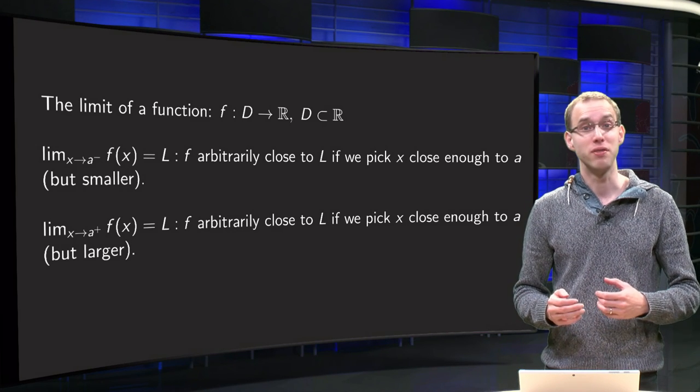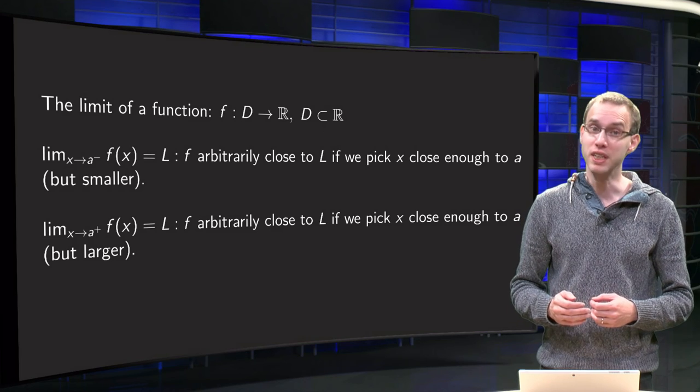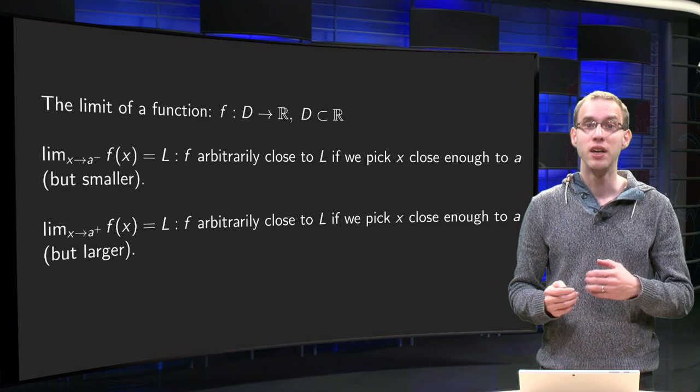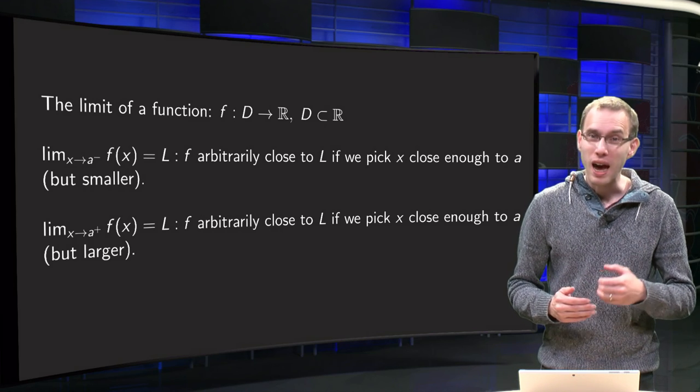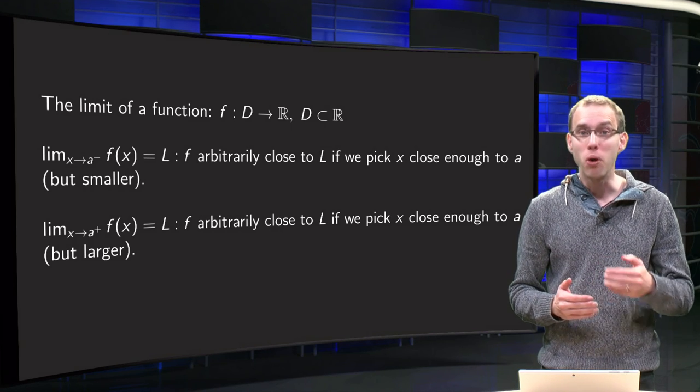In physics you learn that if you move with velocity v during a time delta t, you travel the distance of v times delta t. But what happens if you make delta t smaller and smaller?